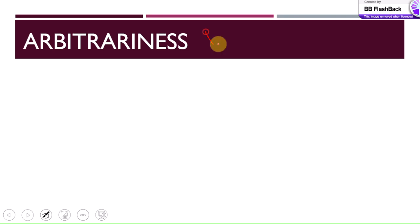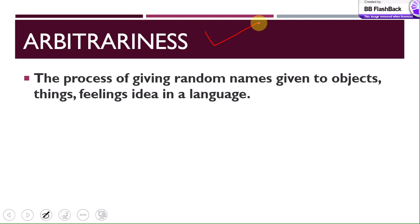The very first property we will discuss is arbitrariness — the process of giving random names to objects, things, feelings, and ideas in language. For example, if a student asks me why a table is called a table, there is no logical answer to that question. The idea that we give random names to objects, things, and ideas in language is called arbitrariness.